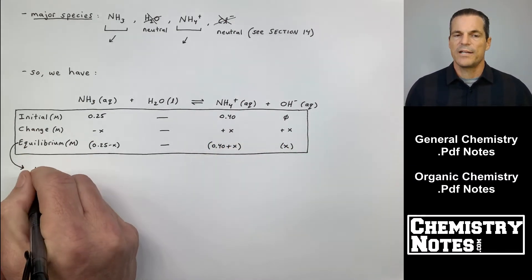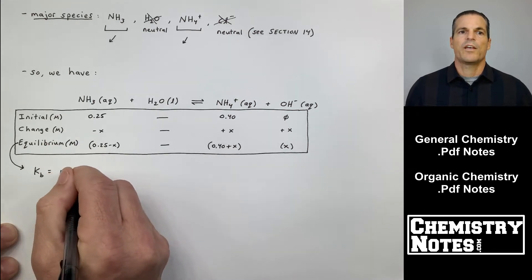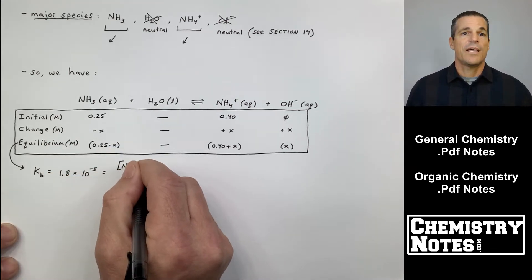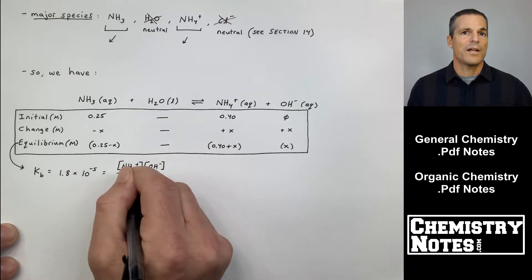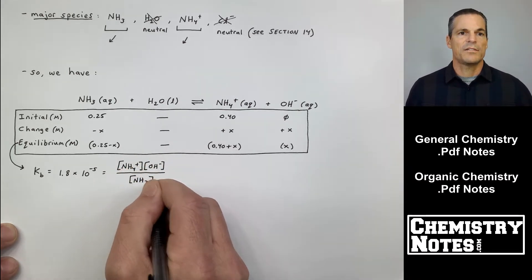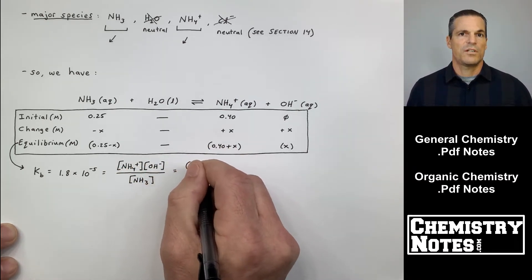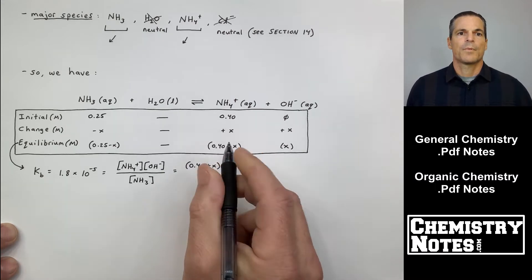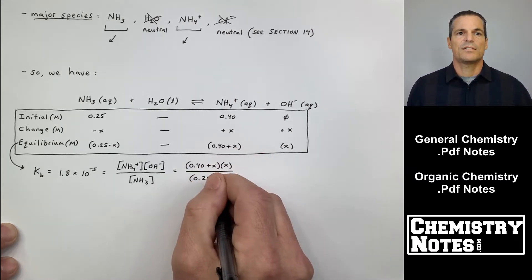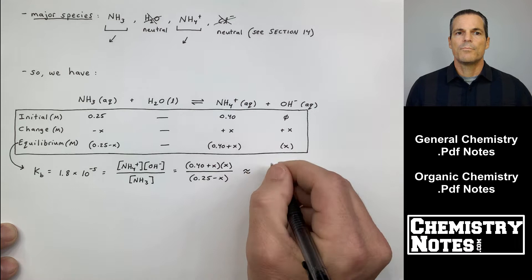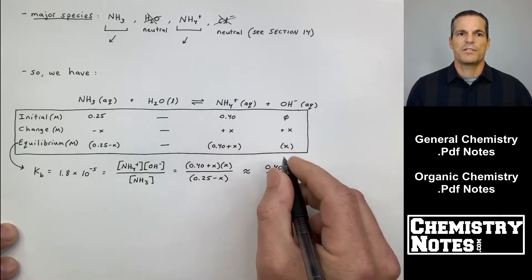Since it's a liquid, we can put lines all the way down. It's not going to show up in our equilibrium expression. So NH3 plus water yields NH4 plus, plus OH minus. What do we have initially? We have 0.25 molar NH3, and then we had 0.40 molar NH4Cl. That's why you see an initial concentration of 0.40 for NH4 plus.